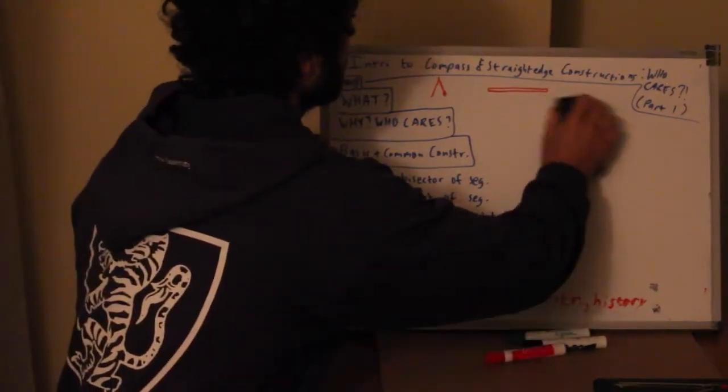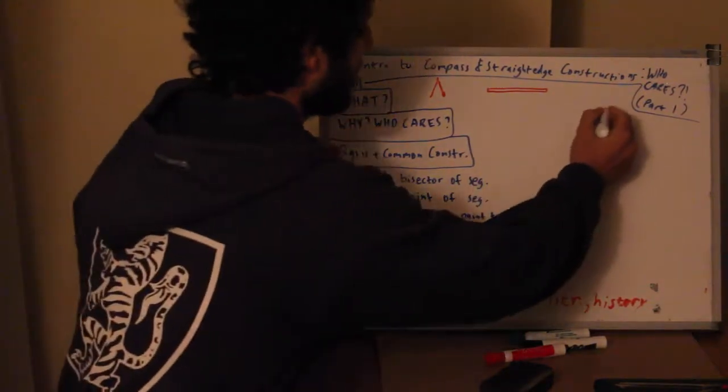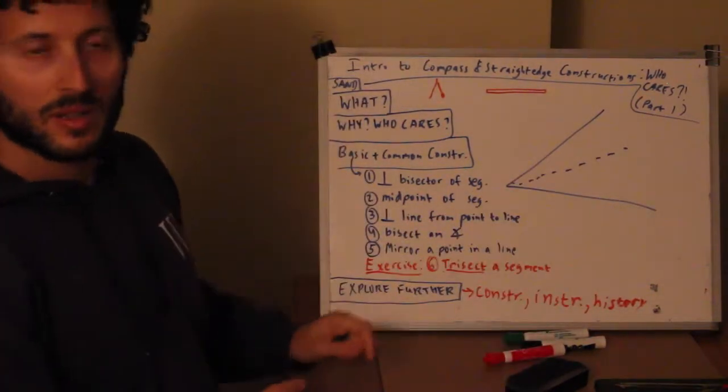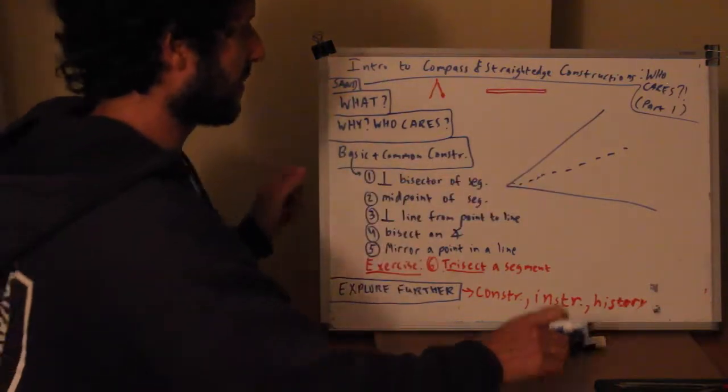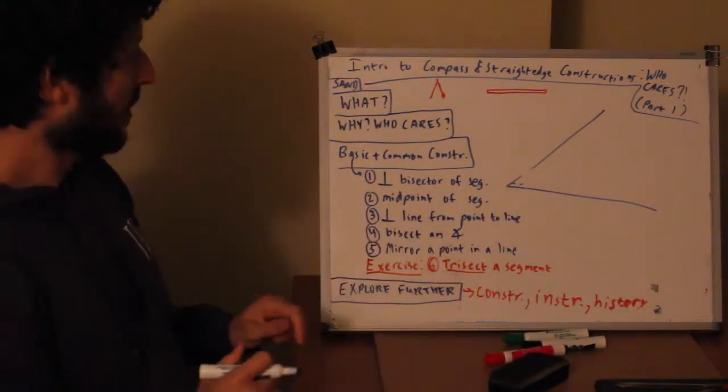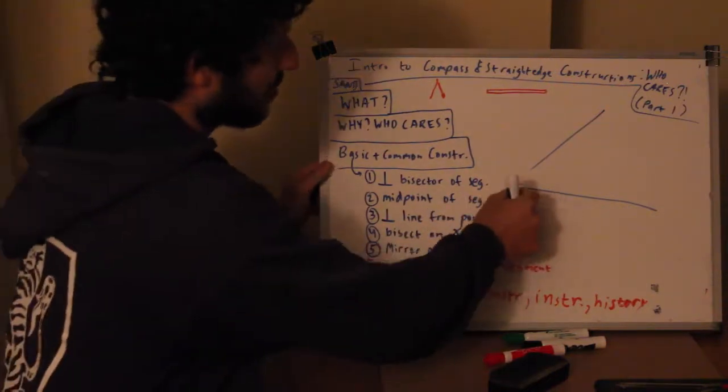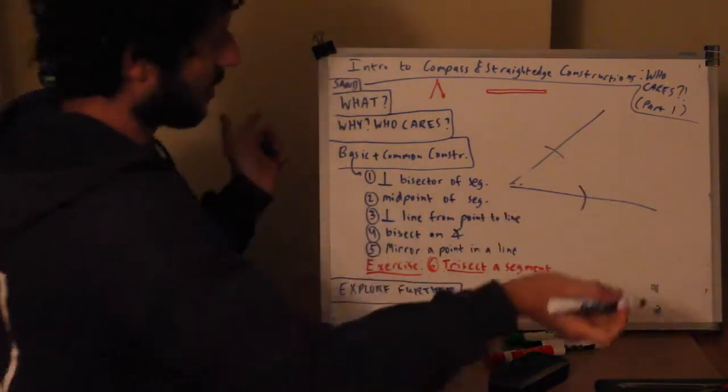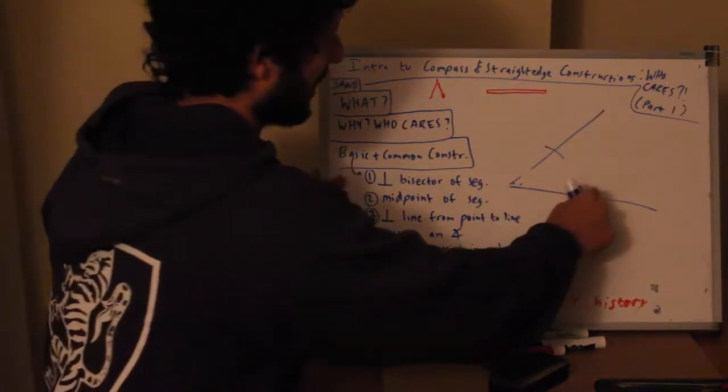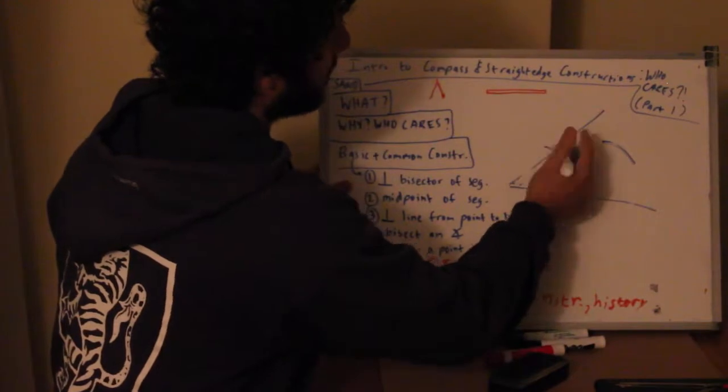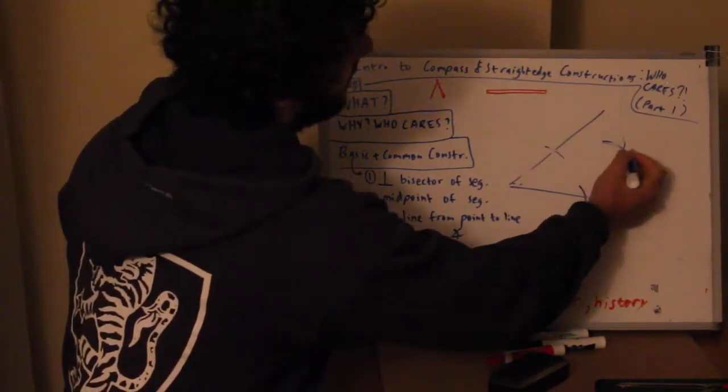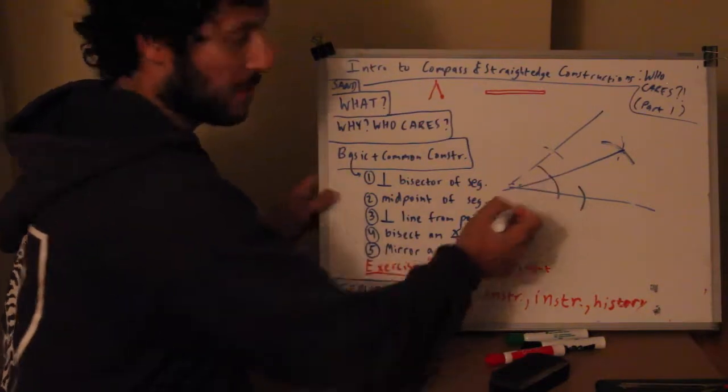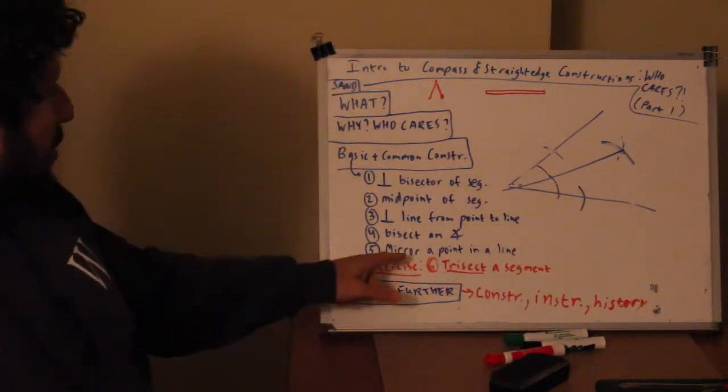Number four: bisecting an angle. Here is some angle and I want to create that exact split so that these two look the same. Take our compass, set it to any radius, you get an arc here. Do the same radius here, so now you get another arc. From here we're gonna do another arc, and from this point we're gonna do the same radius arc here. Now we're gonna connect this point to that point and there you go, we have two equal angles.